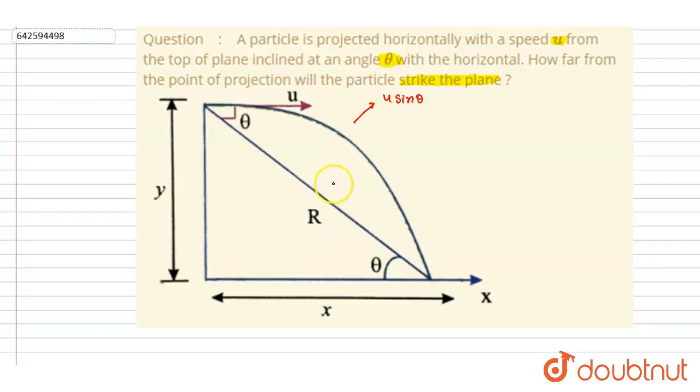And the perpendicular component of g here is g cos theta. Simple. So if I want to write the time of flight is 2u perpendicular by g perpendicular, so that is 2u sin theta by g cos theta, right?